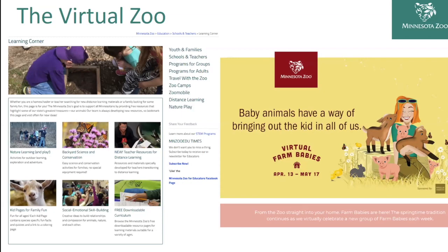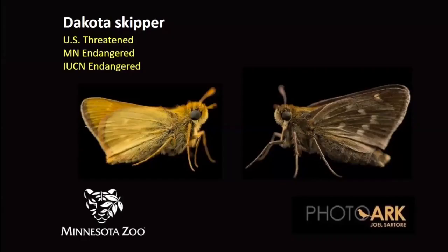I'm a conservation biologist and entomologist by training. The major focus of my program is two endangered species of butterflies. The first is the Dakota skipper, classified as a threatened species at the U.S. level, Minnesota endangered, and endangered under the global IUCN Red List. Here's a male on the left and a female on the right, photographed by Jules Sartori with the National Geographic Society as part of an amazing photo art project capturing unique diversity before it disappears.